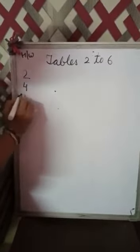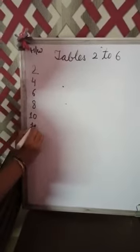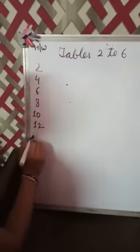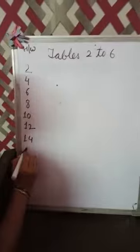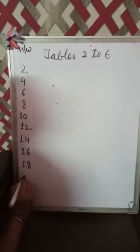Now start table of 2. 2 times 0 is 0. 2 times 1 is 2. 2 2's are 4. 2 3's are 6. 2 4's are 8. 2 5's are 10. 2 6's are 12. 2 7's are 14. 2 8's are 16. 2 9's are 18. 2 10's are 20.